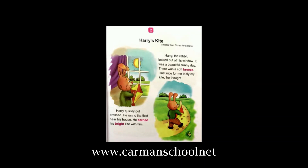Harry, the rabbit, looked out of his window. Who was Harry? Harry was a rabbit. It was a beautiful sunny day. There was a soft breeze. You know what breeze means? It means soft wind. Just nice for me to fly my kite, he thought. He thought to fly a kite because the day was sunny with soft wind blowing.